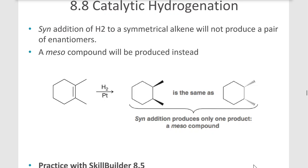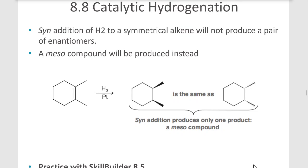If you have a symmetrical alkene, you don't get a pair of enantiomers—you get a meso compound because both hydrogens add to the same side. If your alkene is symmetrical, you get the meso compound. If you had something to make this asymmetrical, like a methyl group, then you would get a pair of enantiomers—actually diastereomers of each other.